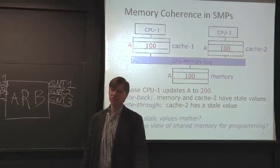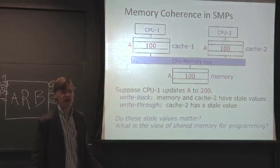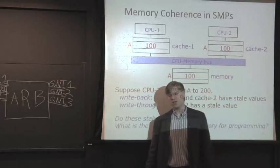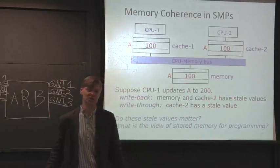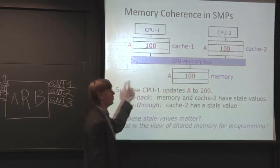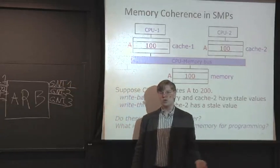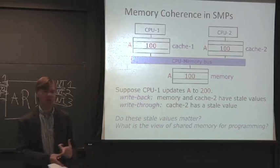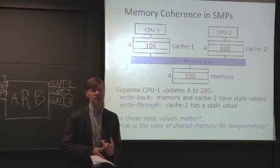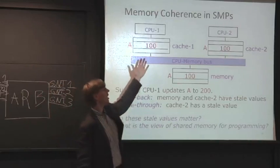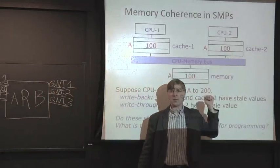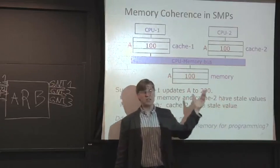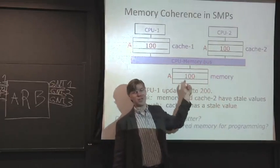Where does this become a problem? CPU2 never sees the value that got updated for address A. More to the point, what happens if CPU2 tries to update cache 2 with a value 300? Now we've got a big problem - we have three different values. This is going to cause problems for both our memory consistency model and just to use this system. It's because we have caches that this problem exists, and because we have two caches that we get stale values.